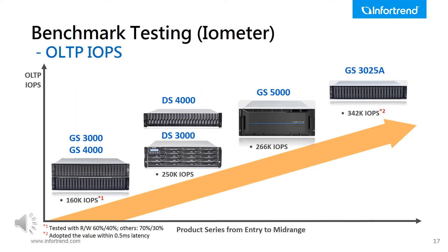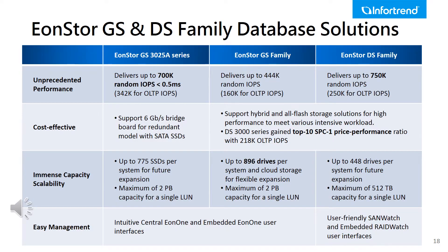Take a look at the product position and OLTP IOPS relation chart on screen. Starting from the GS3000 and 4000 series, GS5000, and finally the all-flash array GSA family, you can refer to this benchmark testing graph to choose your system based on the supported maximum OLTP IOPS. As proven by the benchmark results, InfoTrend is the best device for your database needs. To summarize the advantages: unprecedented performance, cost-effectiveness, immense capacity scalability, and seamless management. Customers can choose the solution suitable for their needs and budget, as shown in the reference table.